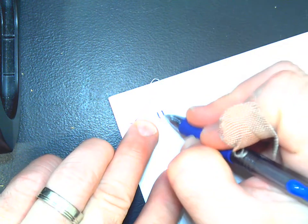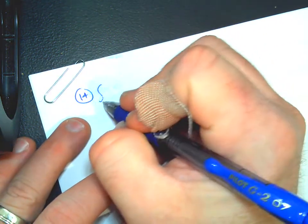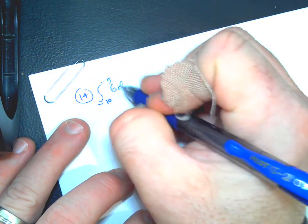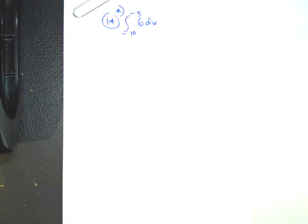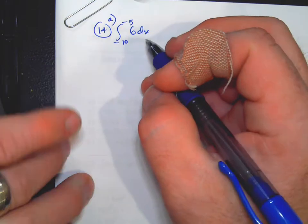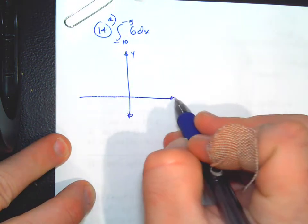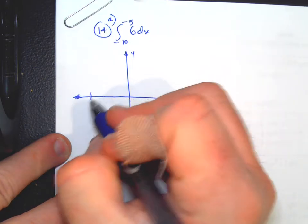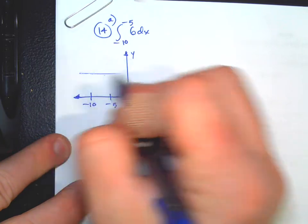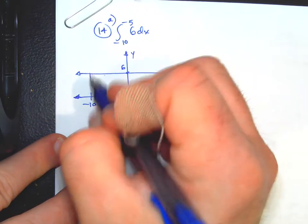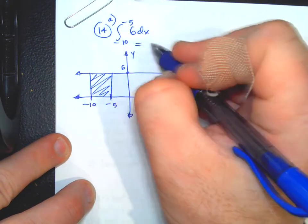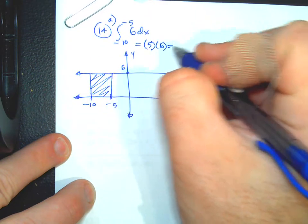Now page 414, problem 14 — sometimes geometry is the best way to integrate. Part a integrates from -10 to -5 of 6 dx. That's a flat horizontal line through 6 — a rectangle. Area equals base times height equals 5 times 6 equals positive 30.